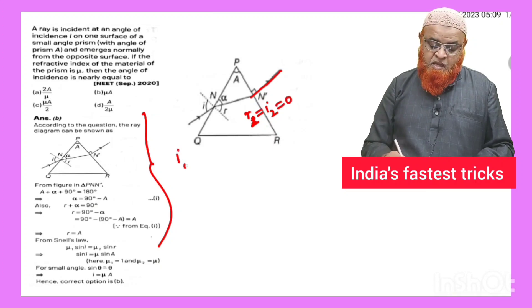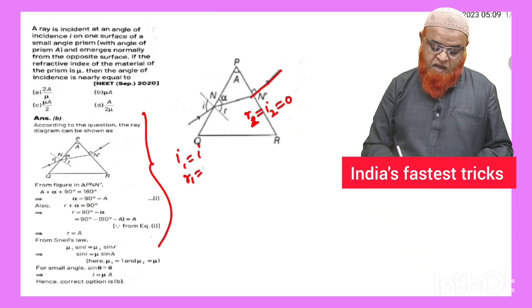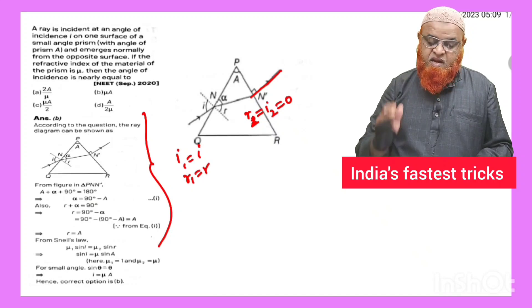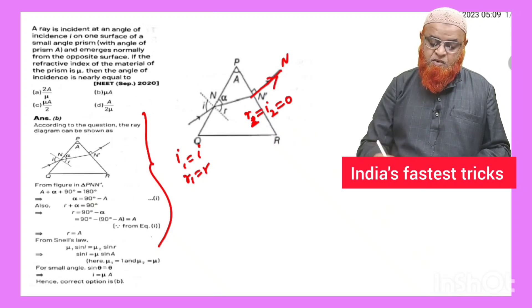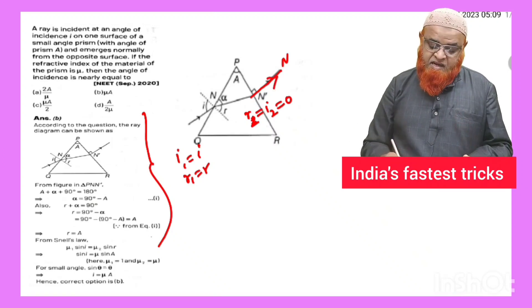So here i1 is equal to i, r1 is equal to r, whereas i2, r2 is equal to 0 because this is going in the normal direction.